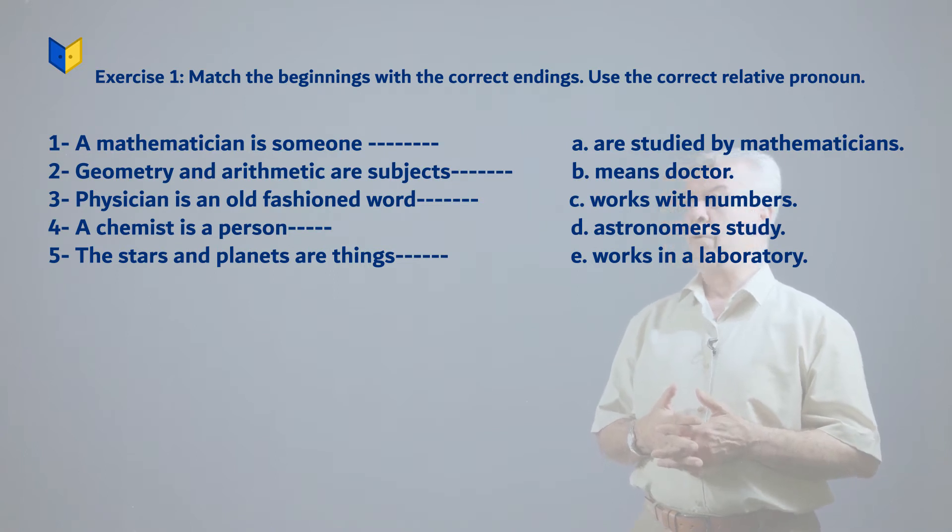Now let's read the definitions of the completions on the right. A: are studied by mathematicians. B: means doctor. C: works with numbers. D: astronomers study. E: works in a laboratory.